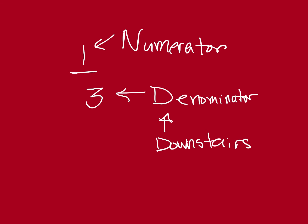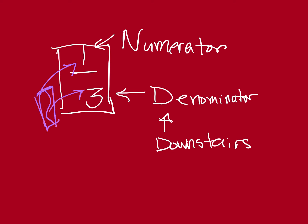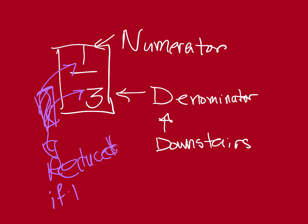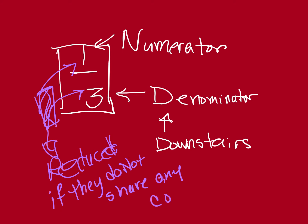So the way that we know that a fraction is reduced is if both the top and the bottom number do not share any common factors. If they do not share any common factors, it is reduced.